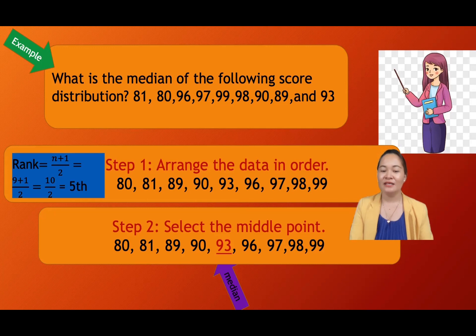Step two, select the middle point. It's very easy to find the middle point if the given number of data is odd. So nine, the center of nine, we have here fifth. Why? Nine is n plus one. The rank here, n plus one over two. So nine plus one, 10 divided by two.